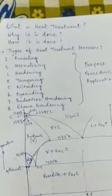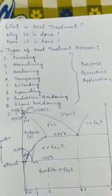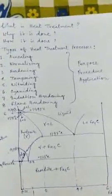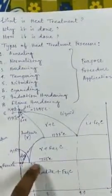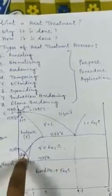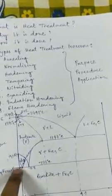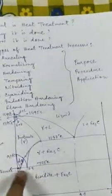The heat treatment process consists of heating the metal near or above its critical temperature. The critical temperature is the temperature where the material changes its crystal structure to another form. In this case, alpha ferrite at 723 degrees centigrade, up to 0.8 percent carbon content, starts changing to austenite.